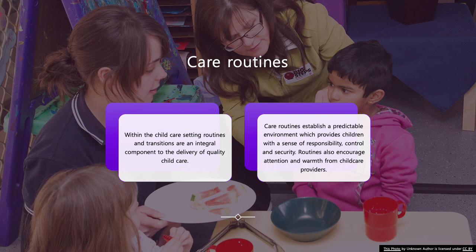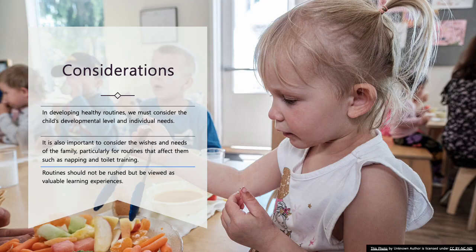Our care routines are where we establish that predictable environment. As providers, we're establishing attention, warmth, and ways that we show care within our settings. We want to make sure that we are considering every child's developmental level and individual needs. It's really important that we look at how much of our day we spend attending to body sensations and the needs of the child, looking at routines such as napping and toilet training. These routines are the crucial elements of a child's day — that's how the child knows what's going to happen next. So it's important that we don't rush them and that we view them as a really valuable learning experience.